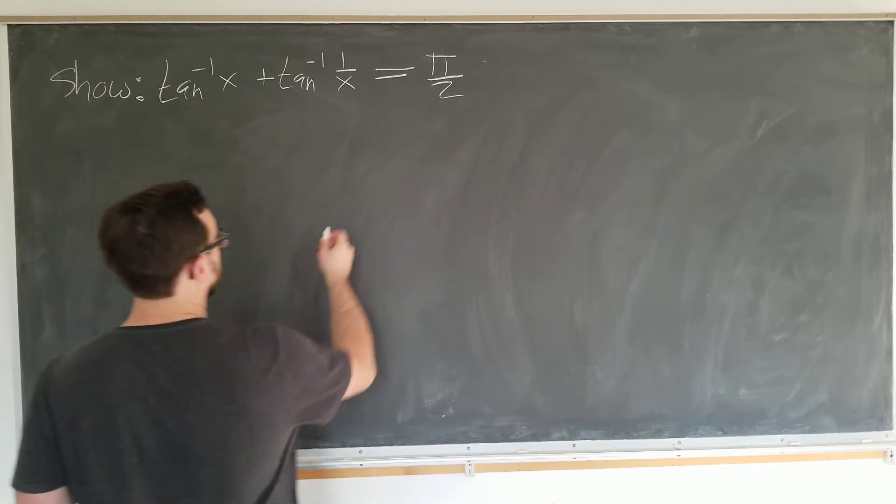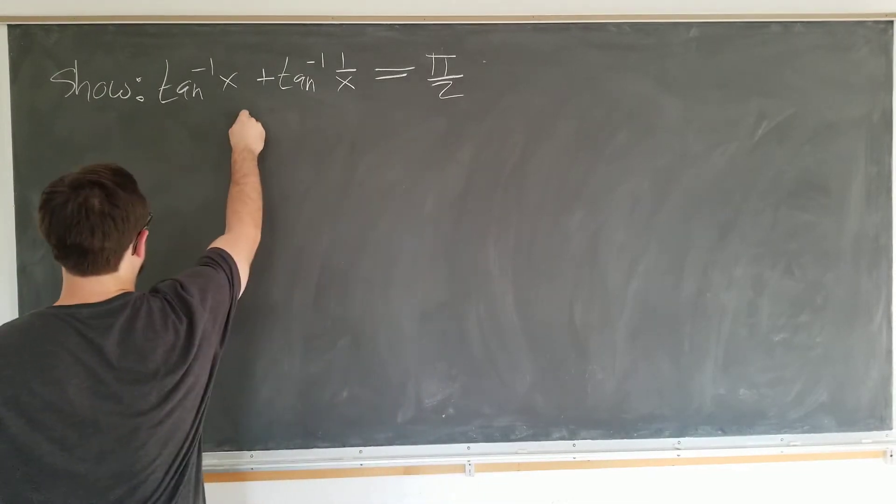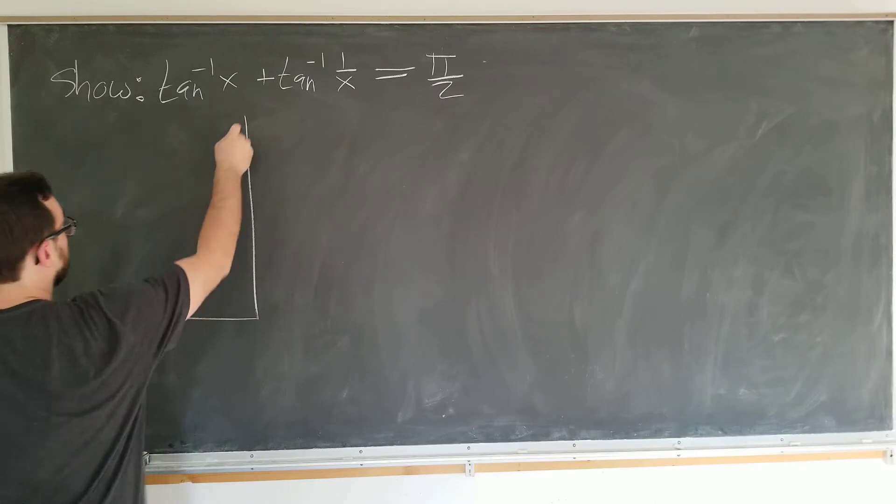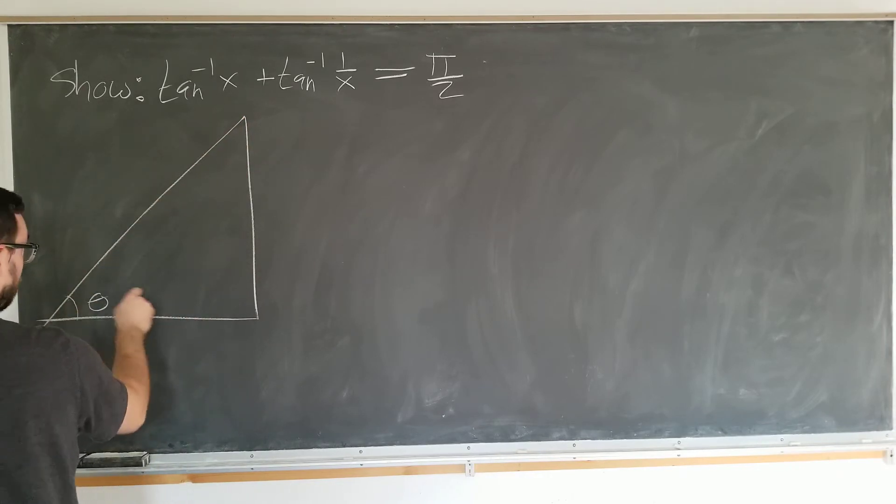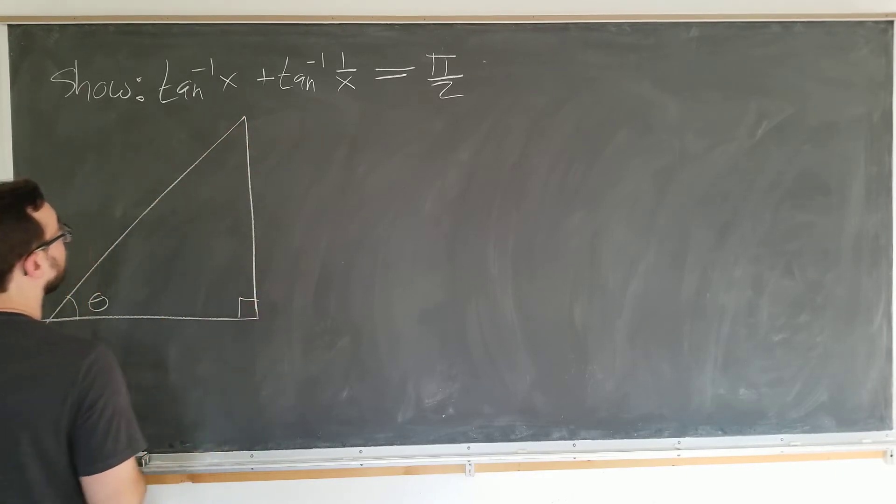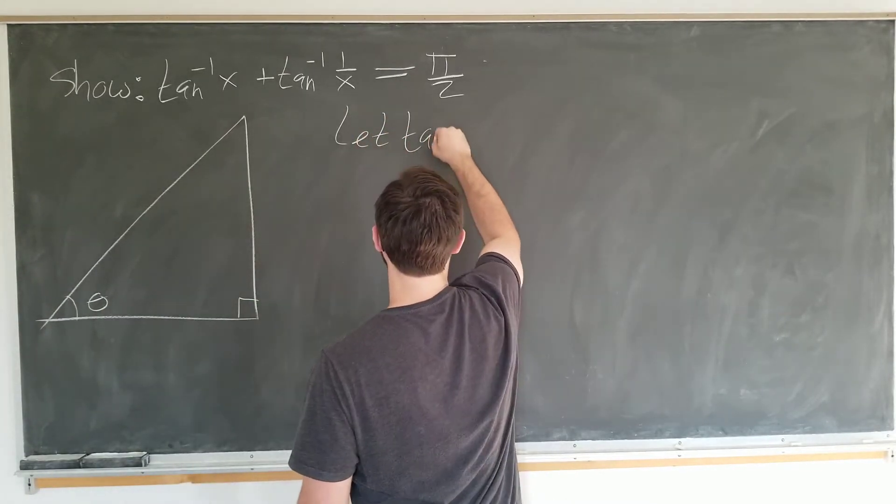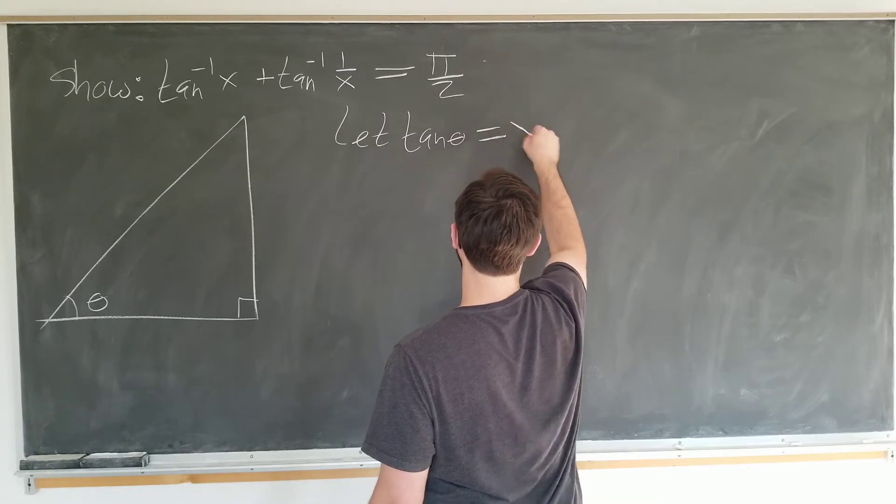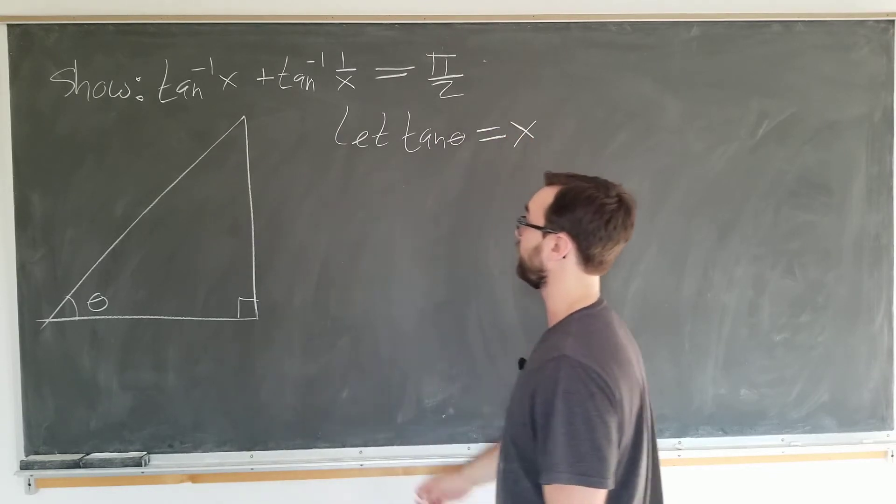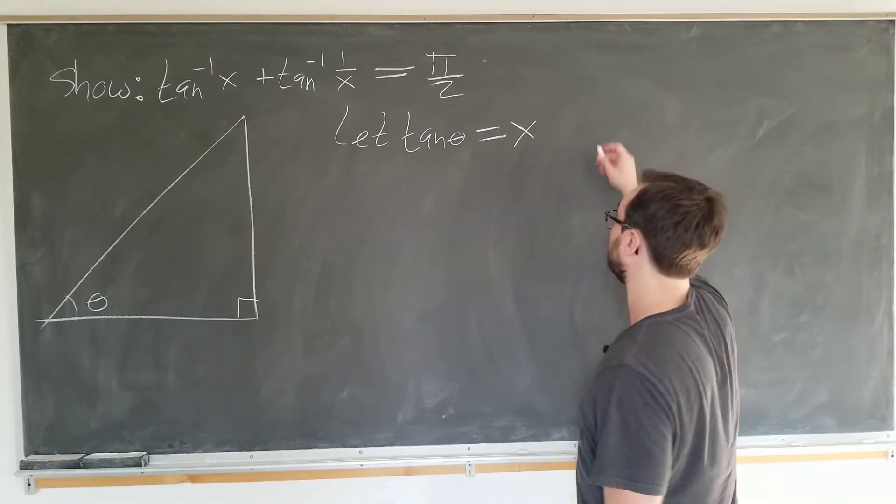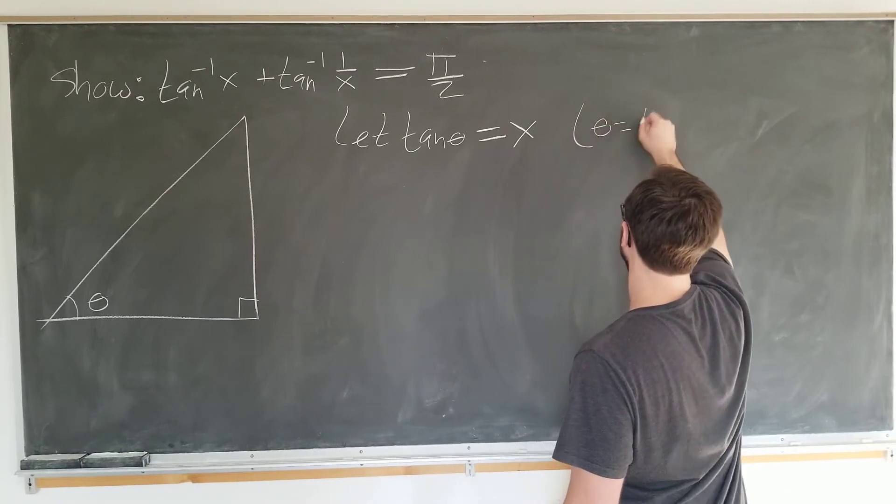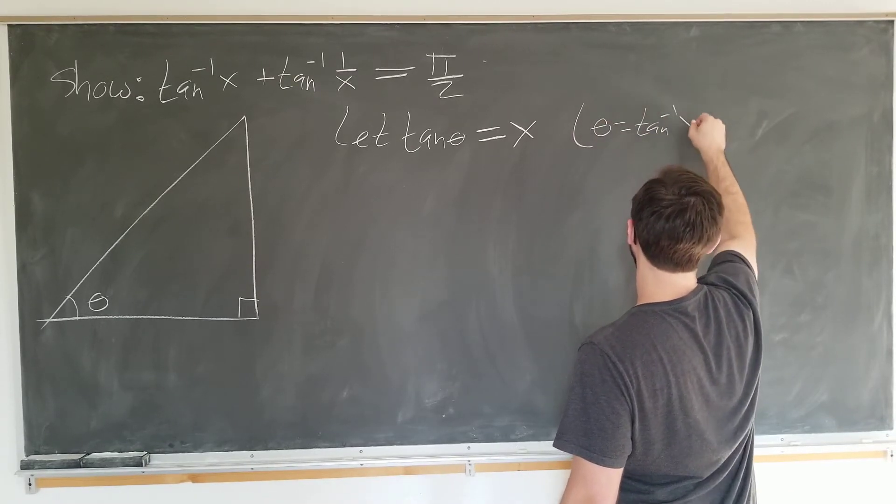So let's draw a nice triangle here. Right triangle, of course. Angle theta. And here we're going to let tangent of theta be equal to x because we want to consider theta is equal to inverse tangent of x, of course.